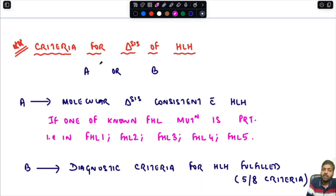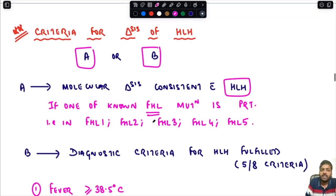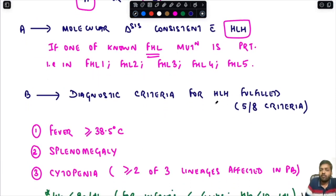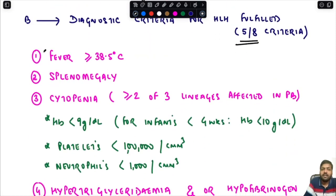For the diagnosis of HLH, there are two criteria: either A — molecular diagnosis — or B — fulfillment of clinical criteria. For molecular diagnosis (criterion A), a known FHL mutation must be present, such as mutations in FHL1, FHL2, FHL3, FHL4, or FHL5. If this is not present, then criterion B applies: at least five out of eight diagnostic criteria must be fulfilled.